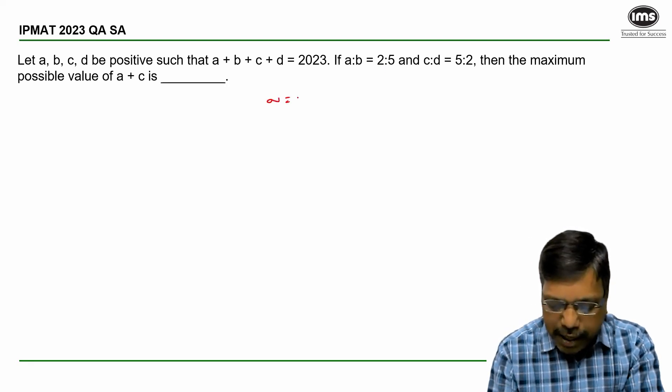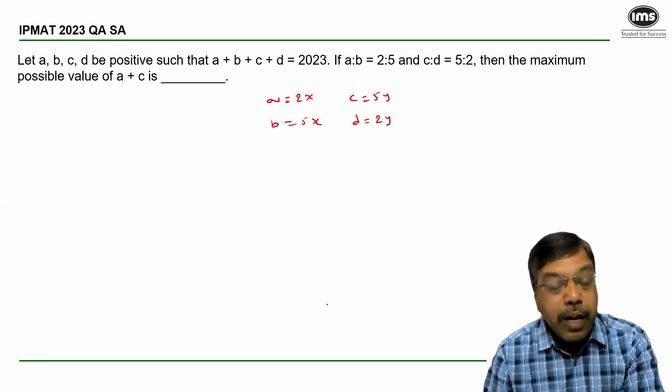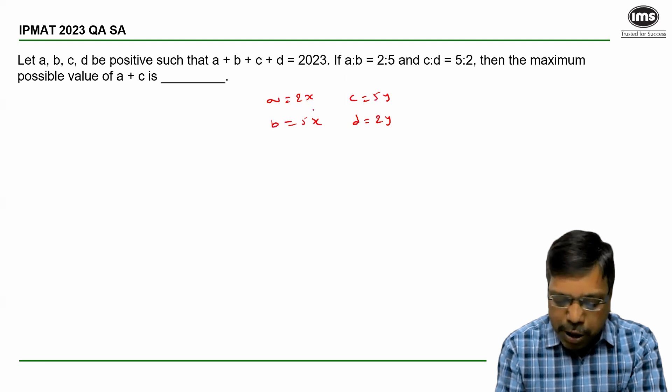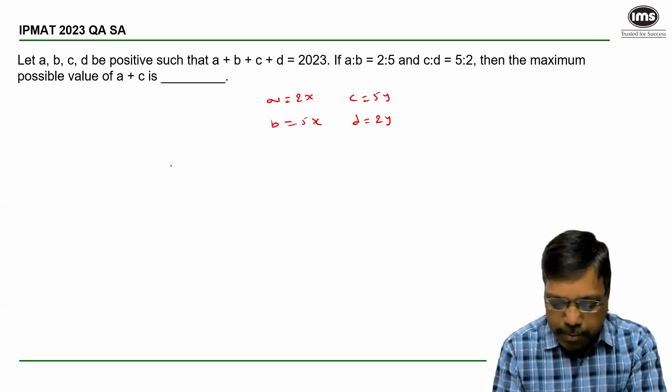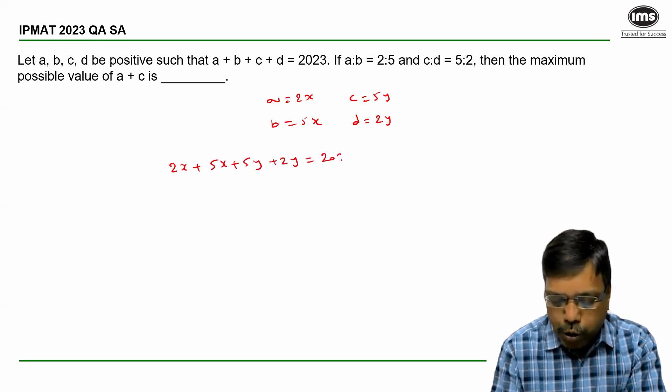Let me consider A as 2x and B as 5x. Now, C to be 5y and D to be 2y. Now, if I substitute the values in the equation, I get 2x plus 5x plus 5y plus 2y is equal to 2023, or 7 into x plus y is 2023.